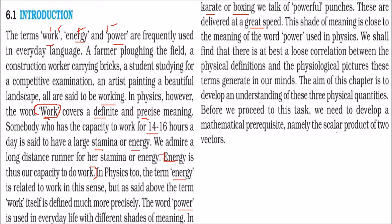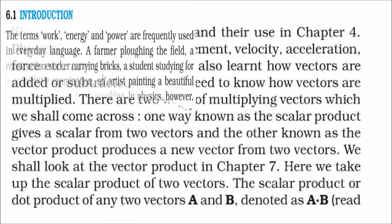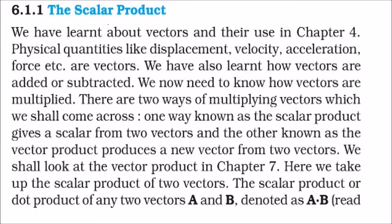Before we proceed, let us understand the scalar product of two vectors. Physical quantities like displacement, velocity, acceleration, and force are all vectors. We have already seen how to add and subtract vectors. Now we will see how to multiply vectors. There are two ways: one is called the dot product, and one is called the cross product. The scalar product gives a scalar when two vectors are multiplied, while the vector product produces a new vector.